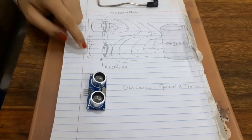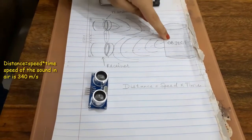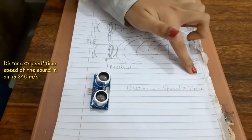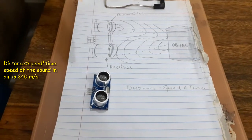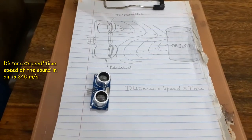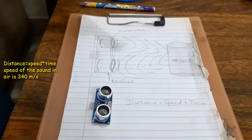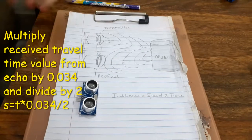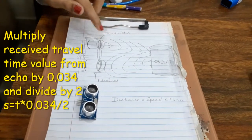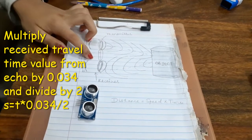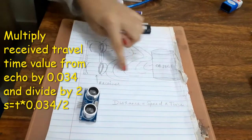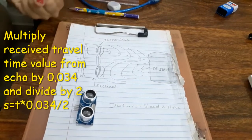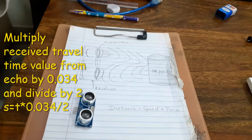Now, to calculate the distance between the sensor and the object using the formula distance equals speed times time, we need to know the speed and time. Since we are using the ultrasonic wave, we know that the universal speed of the ultrasonic wave at room temperature is 340 meter per second. To find out the time, the number which you get from the echo pin has to be doubled because the sound wave needs to travel forward and then bounce backward. So in order to get the distance between the sensor and the object, we need to multiply the received time value from the echo pin by 0.034 and divide it by 2.